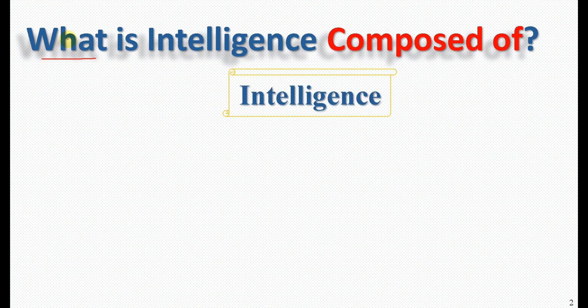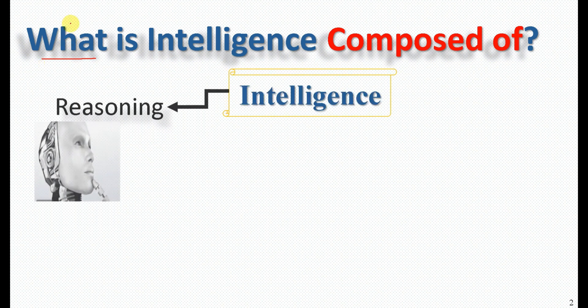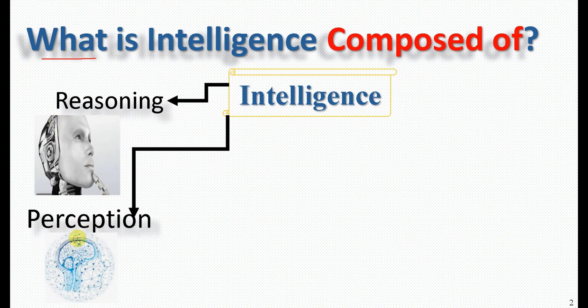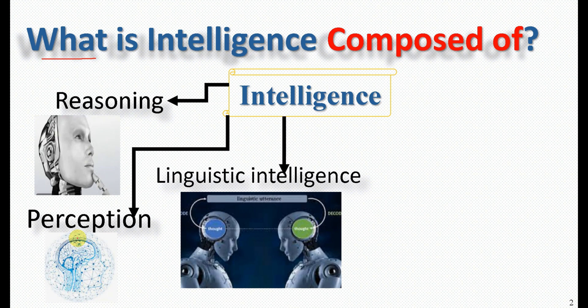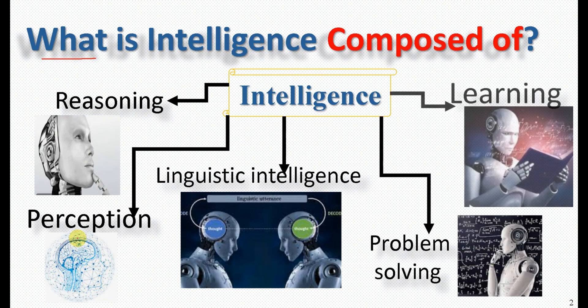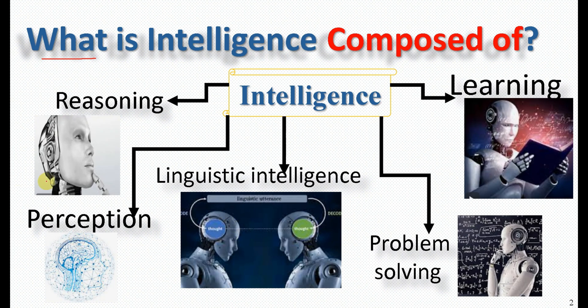This intelligence is composed of several components. The first one is reasoning. The second one is perception. The third one is linguistic intelligence. The fourth one is problem solving and learning. Those are the basic components of intelligence: reasoning, perception, linguistic intelligence, problem solving, and learning.